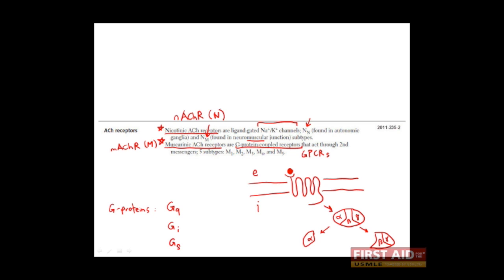Before we move on, there are also different types of muscarinic acetylcholine receptors. There are actually five classes: M1, M2, M3, M4, and M5. We'll discuss these in the next slide.